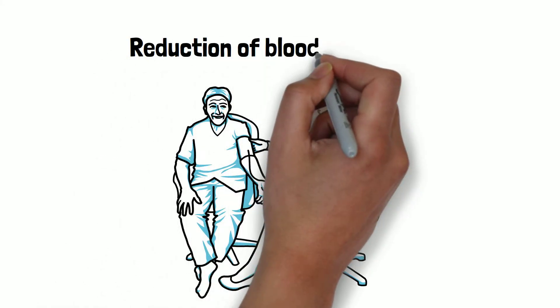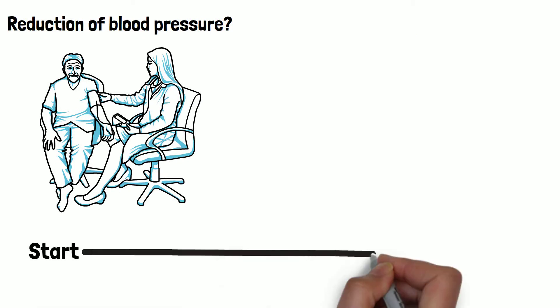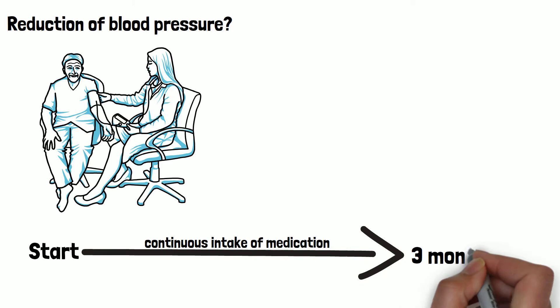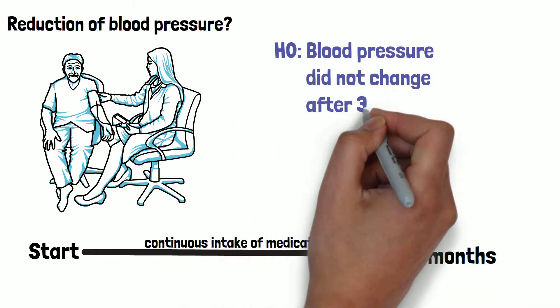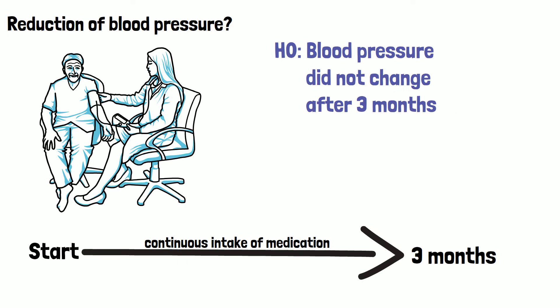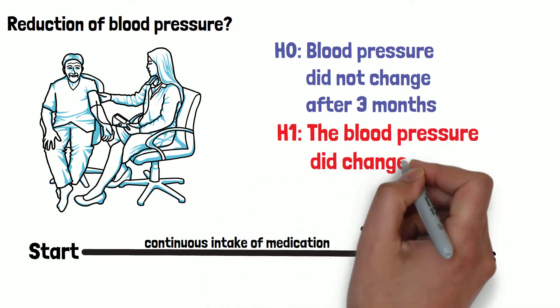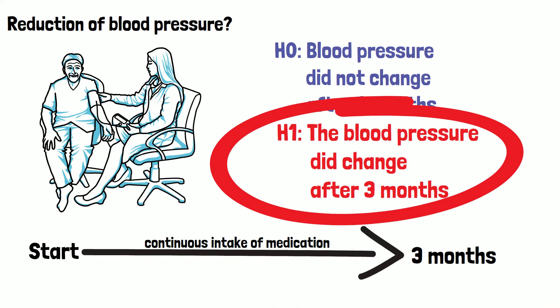Let's take an example of a medication that is supposed to reduce your blood pressure. The null hypothesis could be that your blood pressure three months after continuous intake of the medication did not change from before you started taking the medication. Within a clinical trial the aim is to obtain evidence that shows the opposite. In this case that the blood pressure did change after intake of the medication. This would be described as the alternative hypothesis. It is that scenario opposing the null hypothesis that you would like to support.